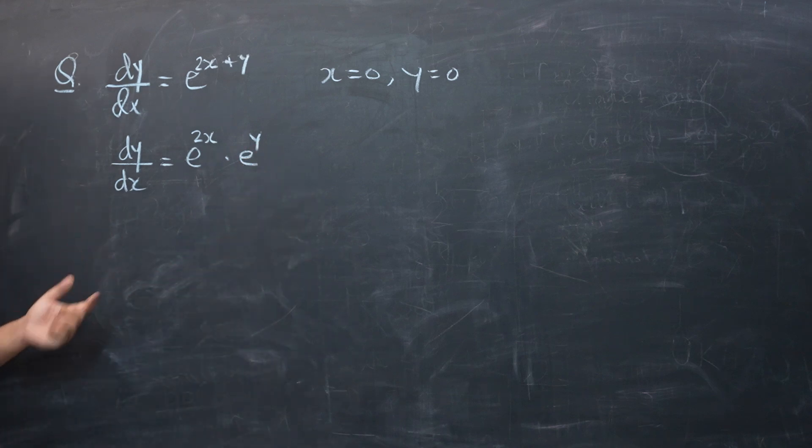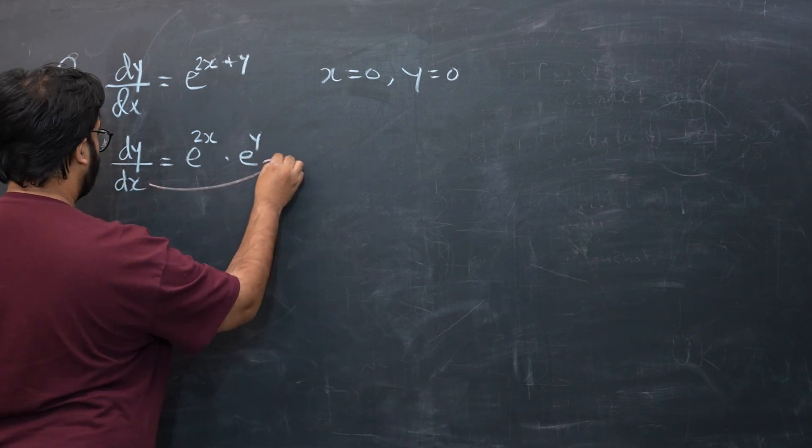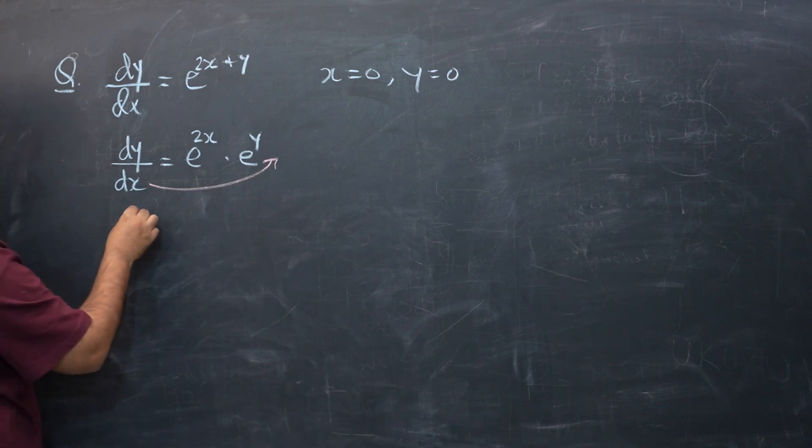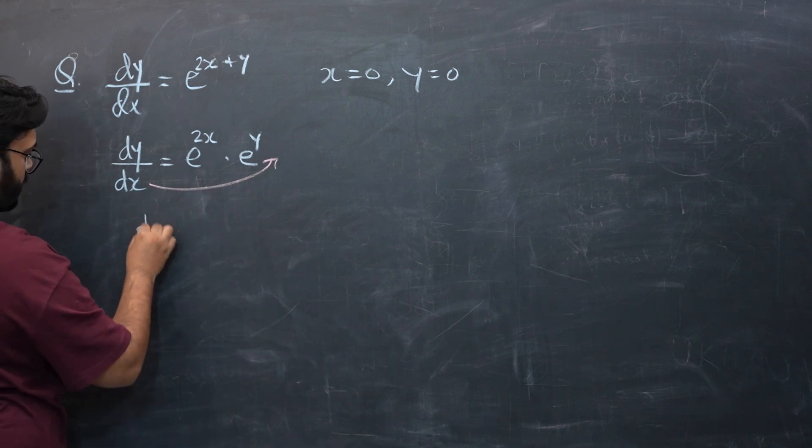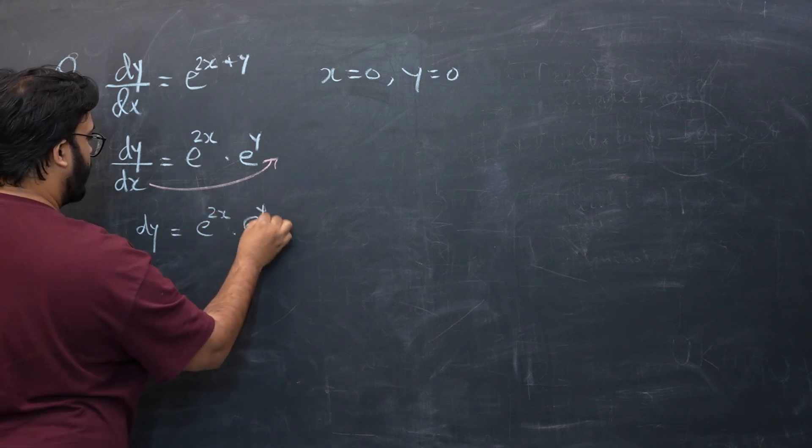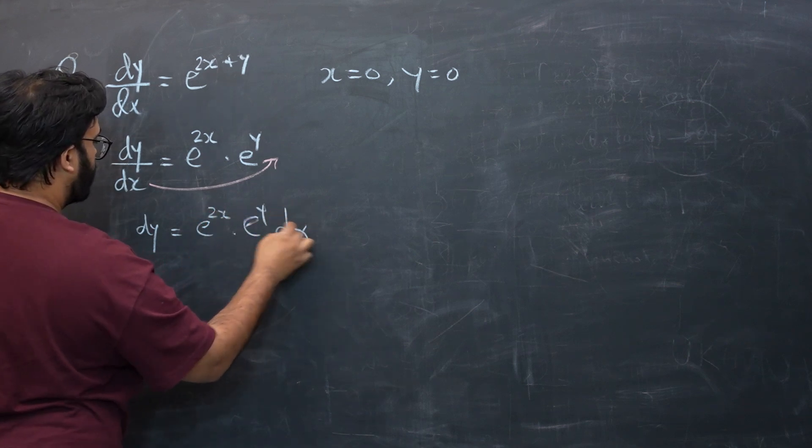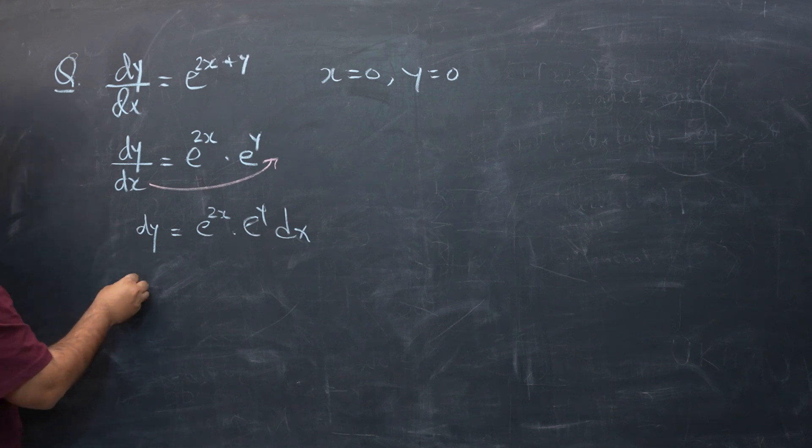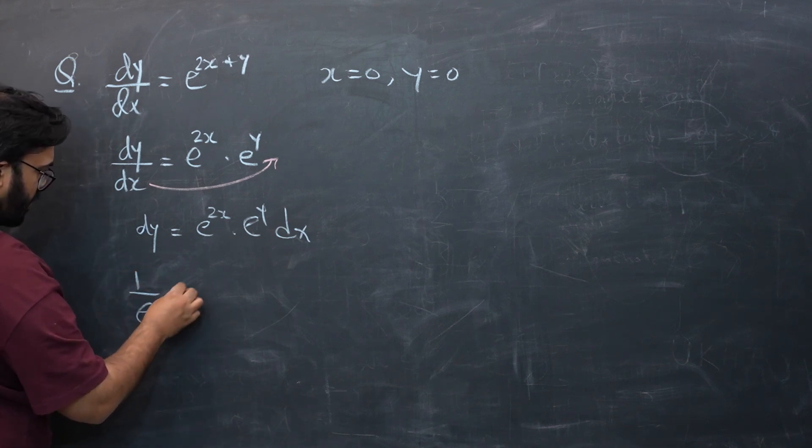So this was the trick on how to solve this. Now let's cross multiply 2x dx over here, so it would be dy equals e raised to power 2x, e raised to power y, dx. So let's bring this e raised to power y onto the left hand side, it will become 1 over e to the power y.